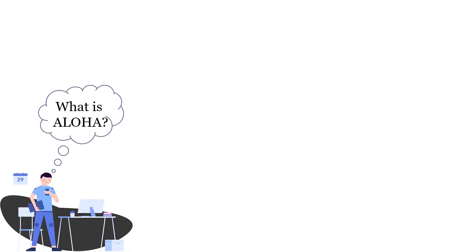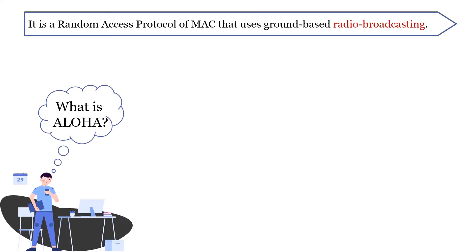Now, what is Aloha? It is a random access protocol of the multiple access protocol family, i.e., MAC, where there are multiple users in the network and each user can randomly access the channel to send data. For this, the protocol uses ground-based radio broadcasting.